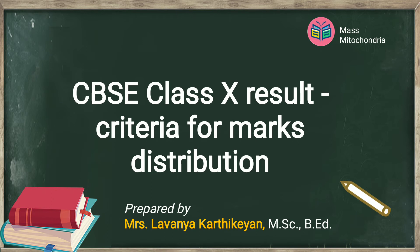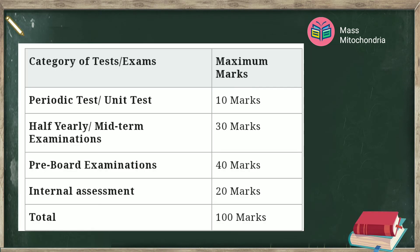CBSE will consider the following exams for awarding the marks. First category: Periodic test or unit test — 10 marks. Half-yearly or midterm examination — 30 marks. Pre-board examination — 40 marks. Internal assessment — 20 marks.